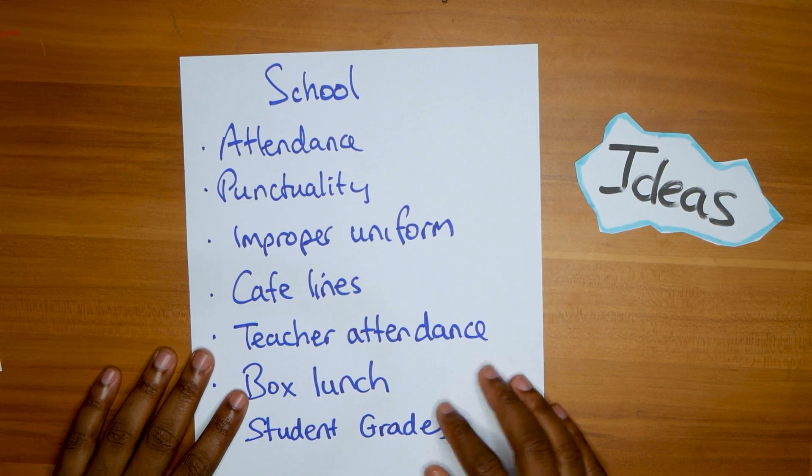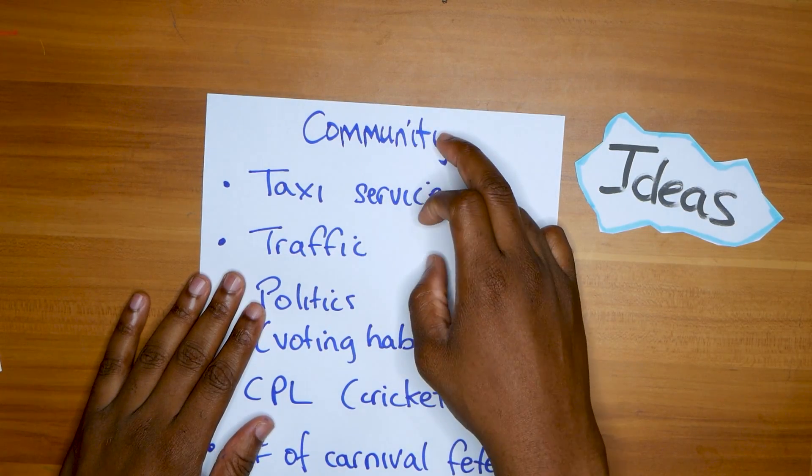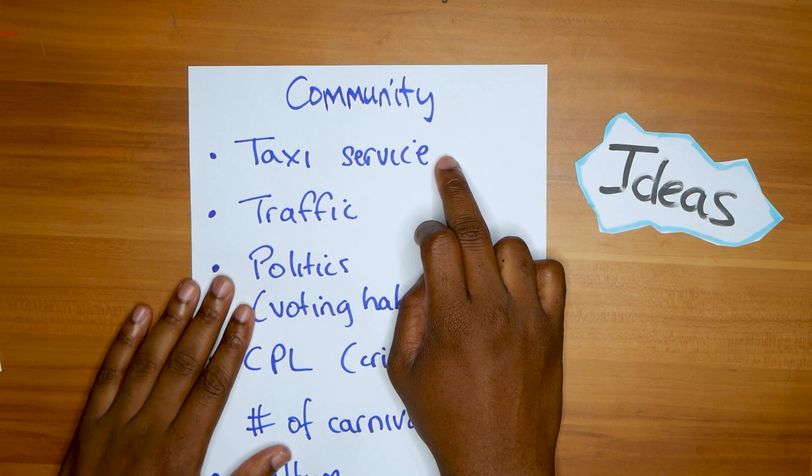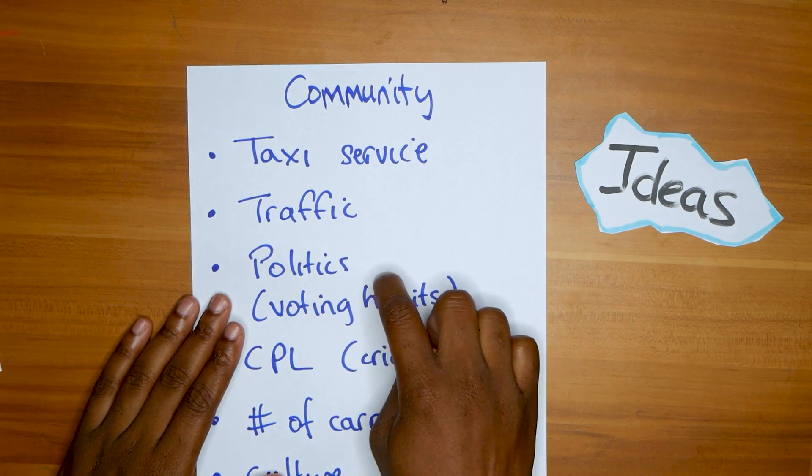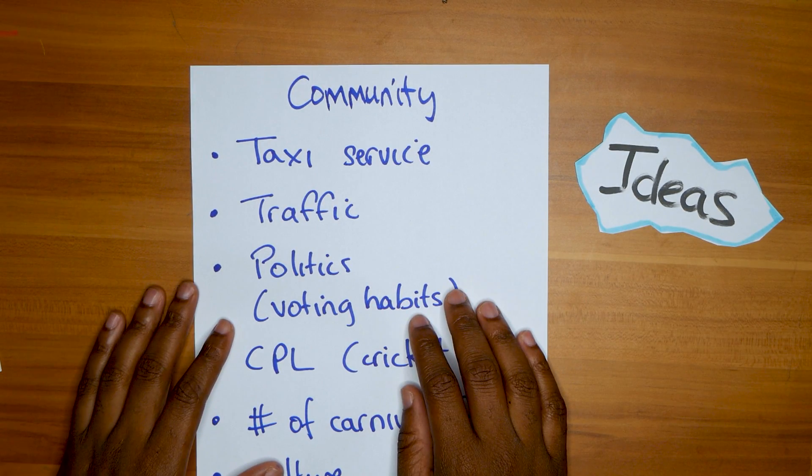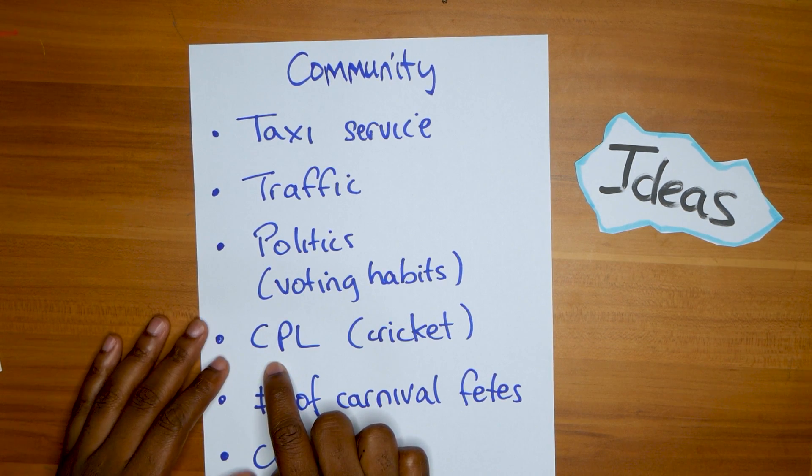Box lunch, student grades—all of these are beautiful ideas you can base off for SBAs that have been done already, and you could just modify it to fit your situation. Or you can look at it from your community: check your taxi service, check it with time, do some statistics with that, traffic, politics, voting habits in your area, what party your community votes for.